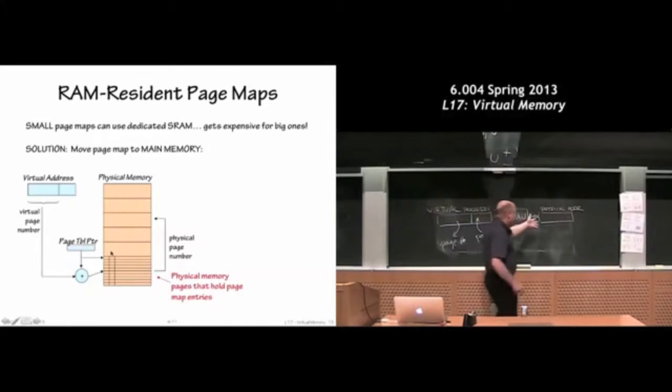I've already got lots of bits of memory. I'll just take some portion of my memory and make an array in memory, which is the page map, one word per page map entry.